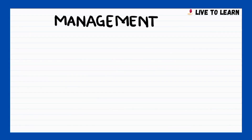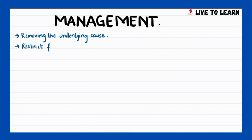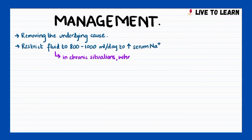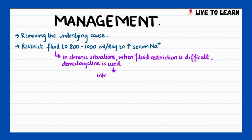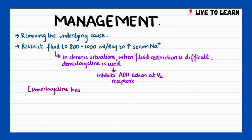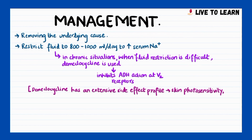To treat SIADH, it's important to remove the underlying cause first, such as a tumour. Fluid is restricted to about 800–1000 mL per day to increase serum sodium concentration. In chronic situations where fluid restriction is difficult, demeclocycline is used, which inhibits ADH action at V2 receptors. It should be noted that demeclocycline has an extensive side effect profile including skin photosensitivity and nephrotoxicity, and it should be used with caution.